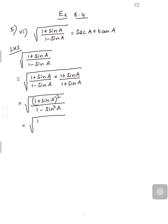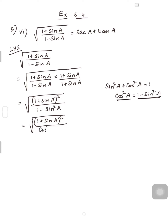So it is the square root of (1 + sinA) whole squared divided by (1 - sin²A). You know the identity sin²A + cos²A = 1, from which cos²A = 1 - sin²A. So in the place of 1 - sin²A in the denominator, I am going to replace it with cos²A. So it is the square root of (1 + sinA) whole squared divided by cos²A.